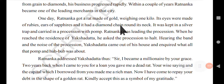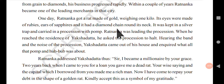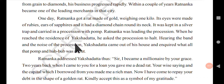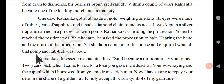One day Ratnanka got a rat made of gold weighing one kilo. Its eyes were made of rubies, its ears of sapphires, and it had a diamond chain around its neck. It was kept in a silver trap and carried in a procession with pomp. Ratnanka was leading the procession. When he reached the residence of Akshadatta, he asked the procession to halt. Hearing the band and the noise, Akshadatta came out and inquired what all that pomp and hubbub was about.